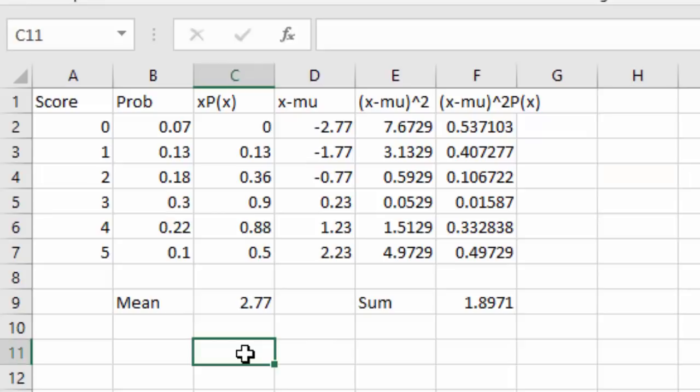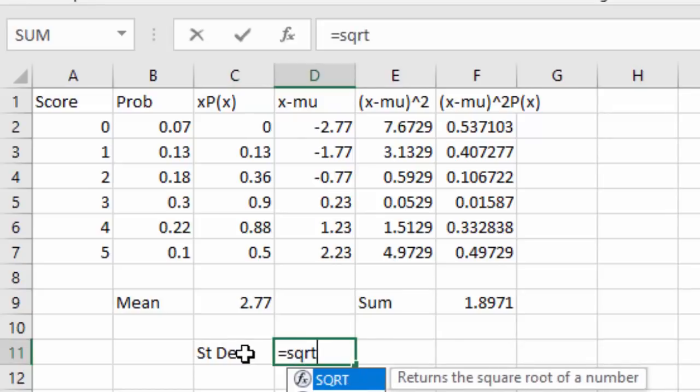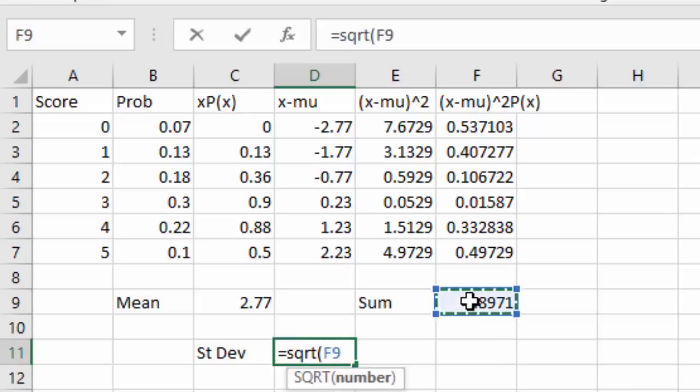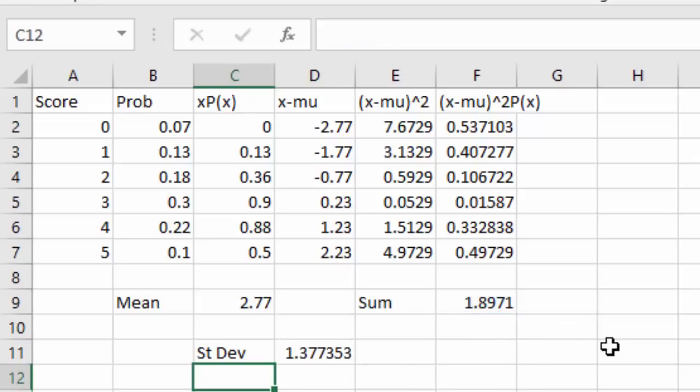To find the standard deviation then, we'll hit equals, and we just need the square root of that value. SQRT, open a parenthesis, select that value, and we hit enter. We get our standard deviation of 1.38.